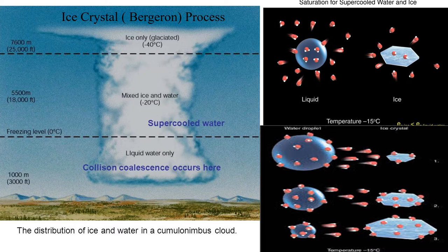Such clouds are called cold clouds. If you look at the left side, the typical cold cloud has formed over the great plains where the cold part is well above the zero degree isotherm. We know isotherm means the same temperature line on the map.